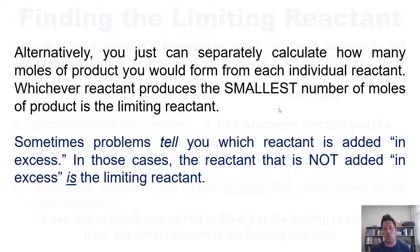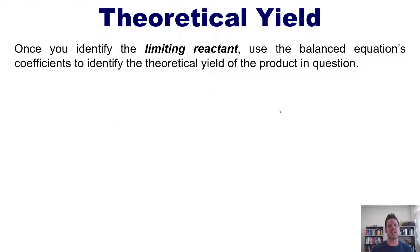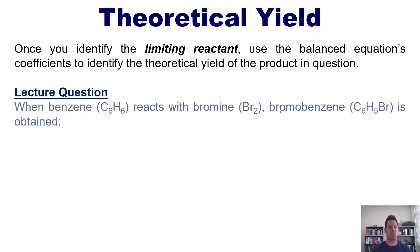So how does this result in theoretical yield? Well, once you identify the limiting reactant, you then just use the balanced equation's coefficients to identify the theoretical yield of the product in question. Let's see if we can tackle this by taking a look at a lecture question.